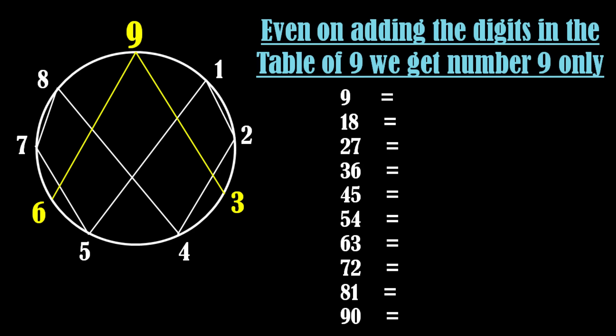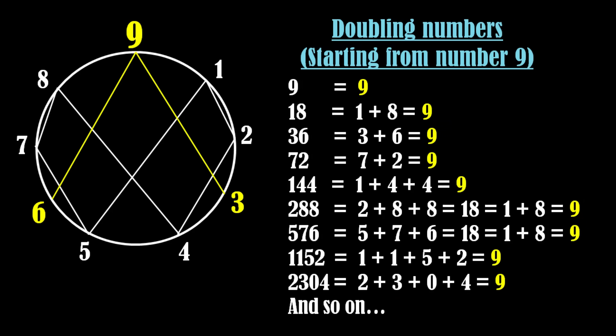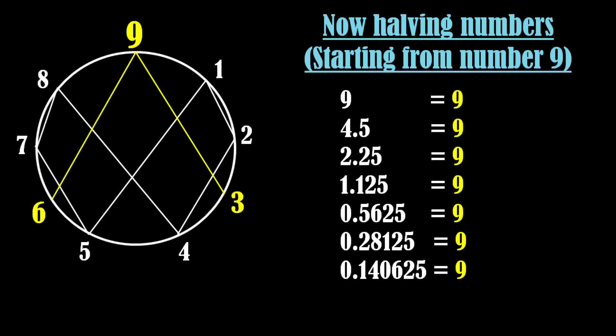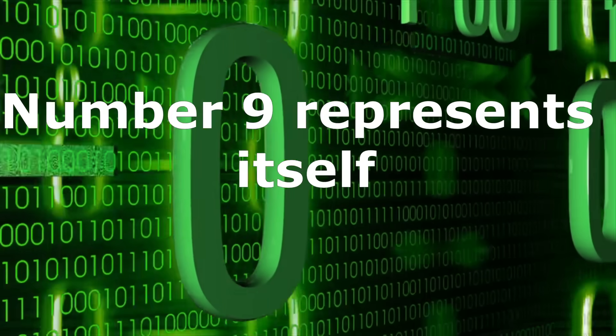Even on adding the digits in the table of 9, we get number 9 only. So we see whether we double or half the numbers starting from number 9, we always get the number 9 only. It implies that number 9 represents itself.